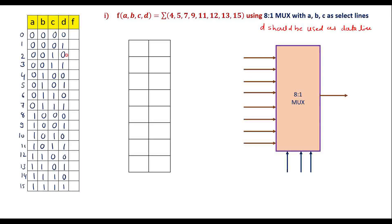For understanding purposes, let me write the truth table for this four-variable function. For four variables, the possible inputs are 0 to 15. The minterm values indicate that for those values the output is 1. So for minterm 4 (0,1,0,0), 5, 7 (0,1,1,1), 9, 11, 12, 13, and 15, the output is 1. In all other cases, output is 0.